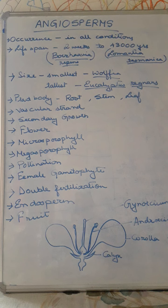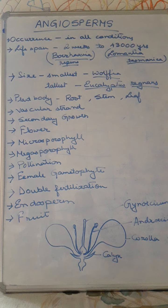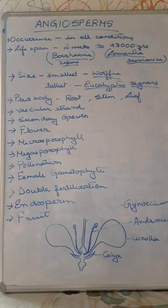Unlike the stele structure in pteridophytes, here the vascular bundles — xylem and phloem — are arranged in bundles. They may be arranged in different ways: conjoined, collateral, open, or closed. These different terms are used for describing the vascular bundles. Secondary growth is observed in dicot plants where cambium tissue is present. In monocots, due to absence of cambium tissue, secondary growth is not observed.